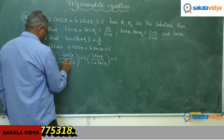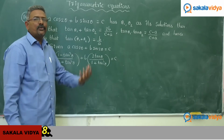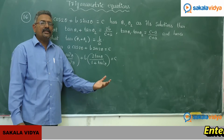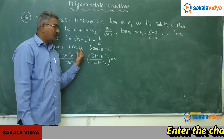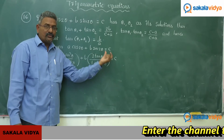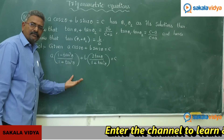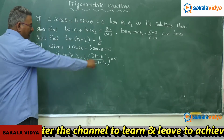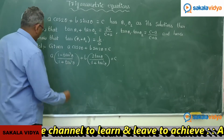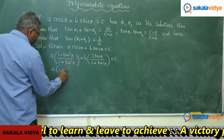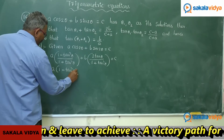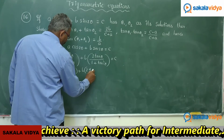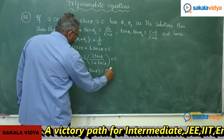If you want the proofs of sin2θ and cos2θ, they are available in our playlist under multiples and sub-multiple angles. Now let us simplify — multiply (1 + tan²θ) on both sides. We get: a·(1 − tan²θ) + b·(2tanθ) = c·(1 + tan²θ).